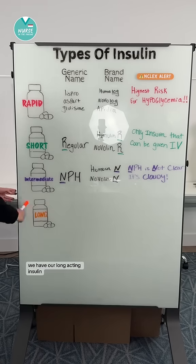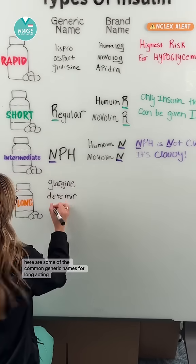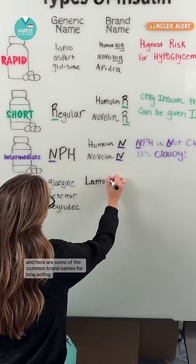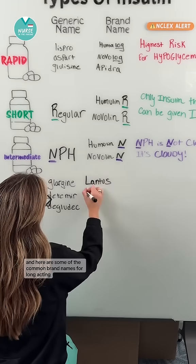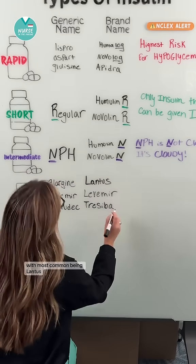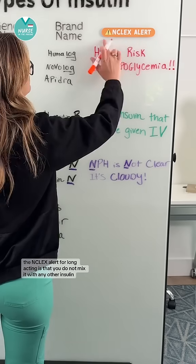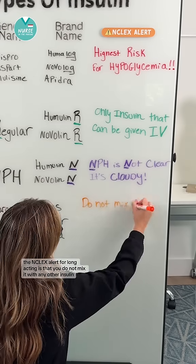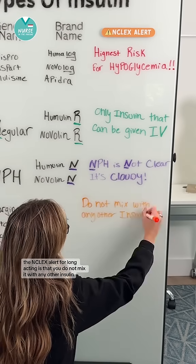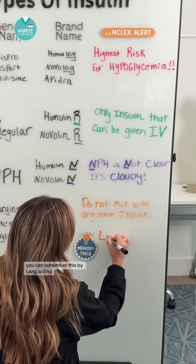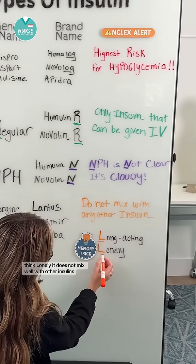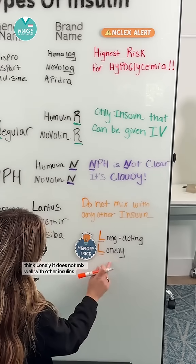And last we have our long-acting insulin. Here are some of the common generic names and brand names for long-acting, with the most common being Lantus. The NCLEX alert for long-acting is that you do not mix it with any other insulin. You can remember this by thinking 'long acting — think lonely.' It does not mix well with other insulins.